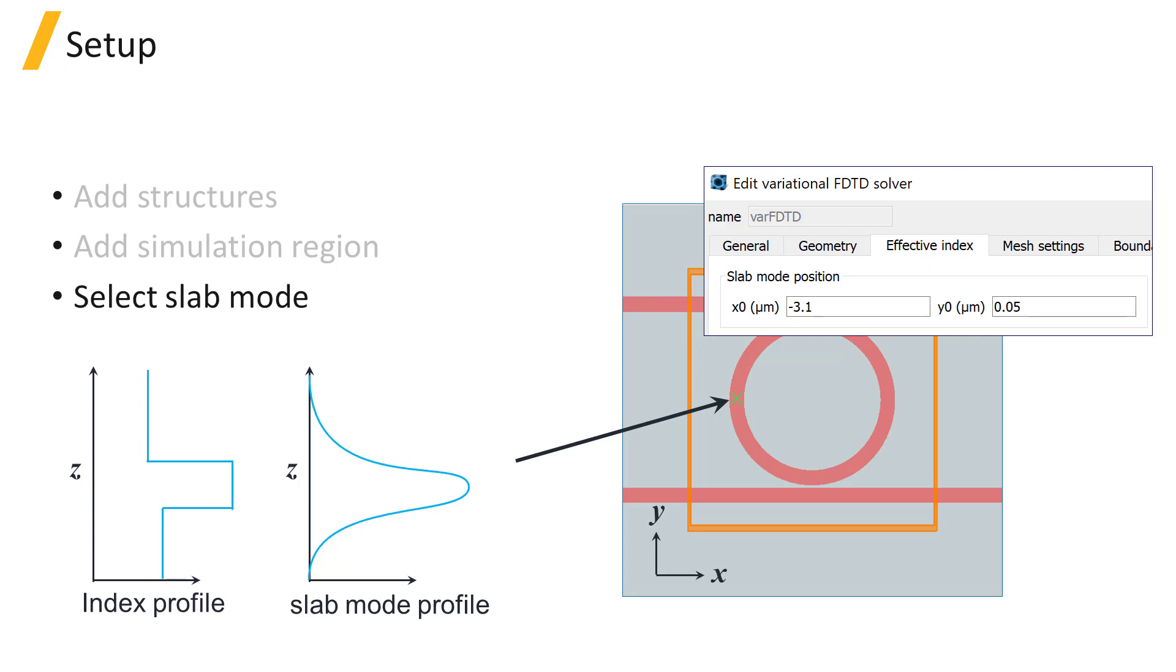The slab mode is used in the calculation of the effective 2D materials at each XY position of the solver region in order to collapse the 3D problem to a 2D problem. This calculation will be discussed in the following unit.